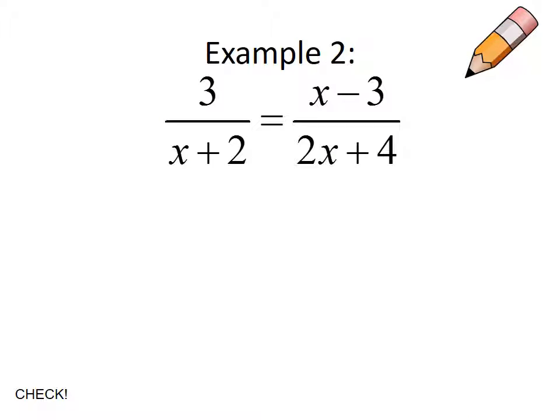Let's take a look at another one. I want to cross multiply because I have a fraction equal to a fraction. I have a 3 times a 2x plus 4, bring down my equals, I have an x plus 2 times an x minus 3.